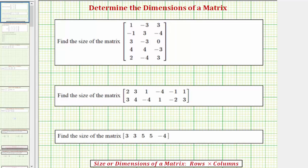Welcome to several examples on how to determine the size or dimensions of a matrix. The size or dimensions of a matrix are indicated by the number of rows and the number of columns in the matrix, where the rows run from left to right and the columns run from the top to the bottom.